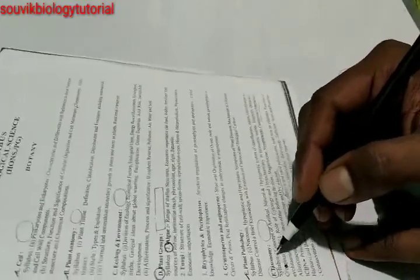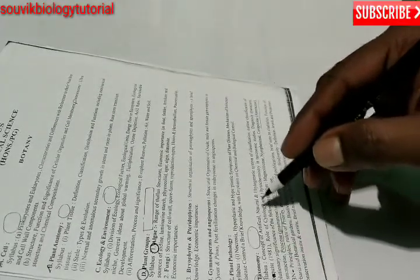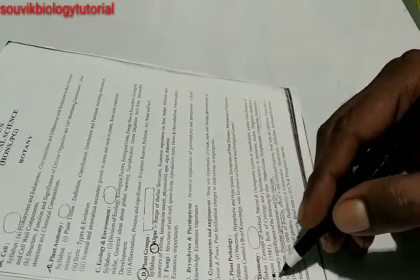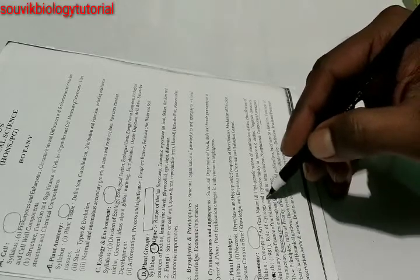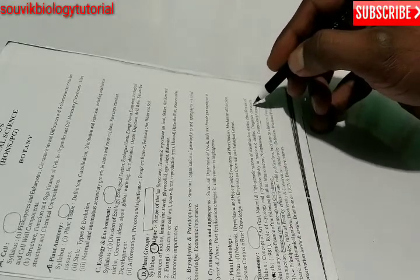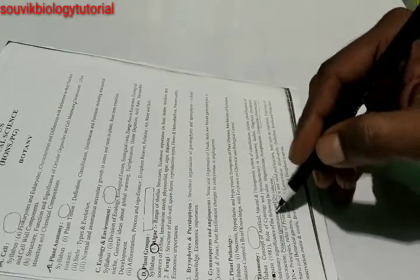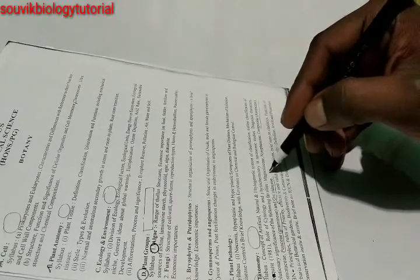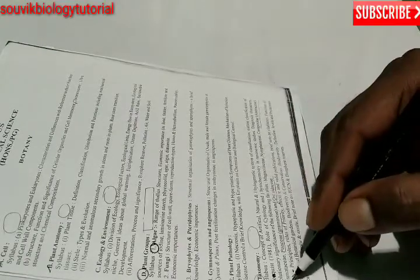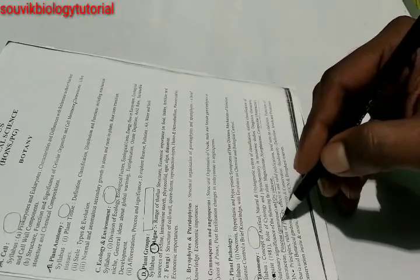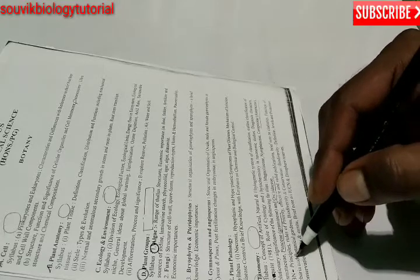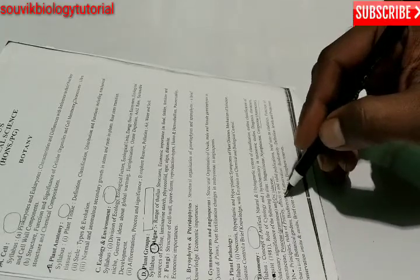Next is taxonomy. From taxonomy you have to study this concept of artificial, natural and phylogenetic system of classification, outline classification of Arthur Cronquist, role of cytology and phytochemistry in taxonomic studies, diagnostic characters, evolutionary significance of the following families such as Magnoliaceae, Nymphaeaceae, Compositae or Asteraceae, Alismataceae, Poaceae or Graminae and Orchidaceae. Next is ICBN principles, rules of priority, effective and valid publications, brief note on cladistics, function of herbarium and botanical gardens.